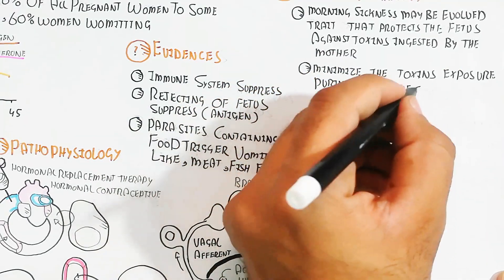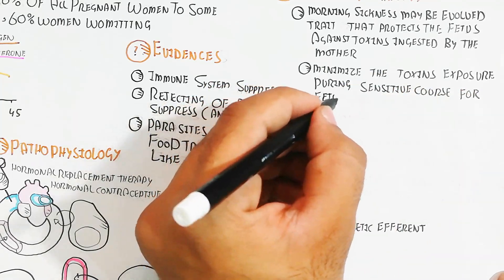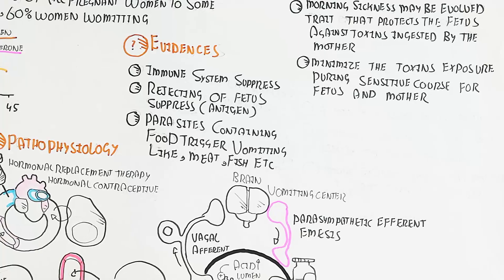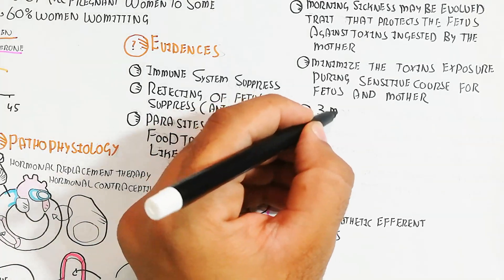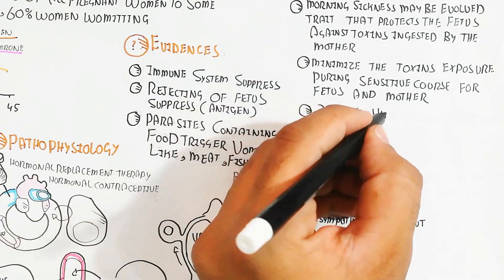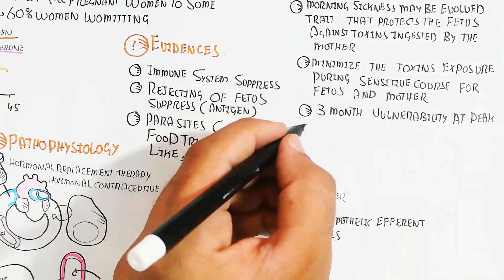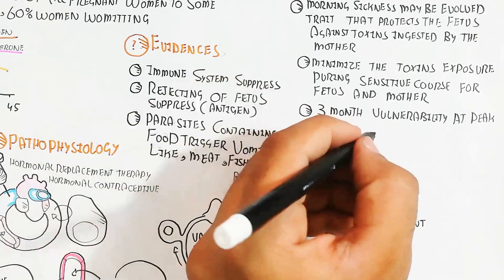During the sensitive course for fetus and mother, the three-month period has peak vulnerability. Women who have no nausea and vomiting of pregnancy are more likely to miscarry, so it is prevention of miscarriage through morning sickness.